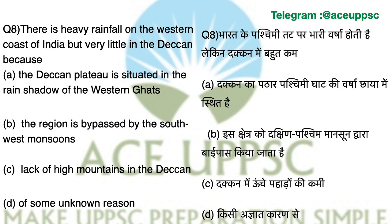Question number 8. There is heavy rainfall on the western coast of India but very little in the Deccan. What is the reason? The answer is A: the Deccan plateau is situated in the rain shadow of the Western Ghats. The rain shadow is the area where rainfall is reduced because the range blocks moisture.